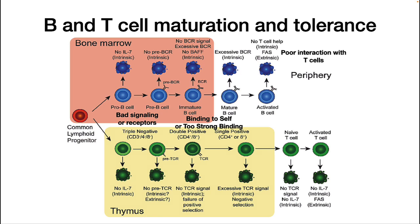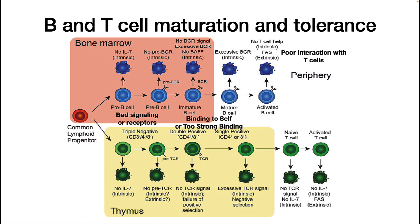We now turn to how B cells and T cells mature and how they are trained to recognize antigens — mostly macromolecules, most often pieces of protein. How do they know if a protein is part of the host or not, and how do they respond to so many antigens? Common lymphoid progenitor cells enter either the bone marrow (B cells) or the thymus (T cells) for maturation. As they are created, they are programmed for cell death.